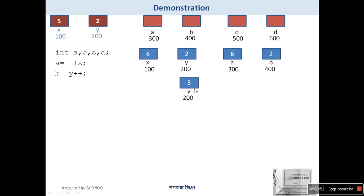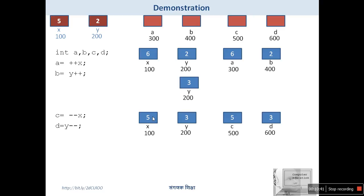Next, c = --y is a pre-decrement. This immediately updates memory location 100 — wait, it decrements x, so x goes from 6 to 5. Then d = y-- is a post-decrement. At this time y is 3, so that same value is copied to memory location d (address 600). The memory demonstration: x value is updated immediately, but y is not yet updated because it is a post-decrement.